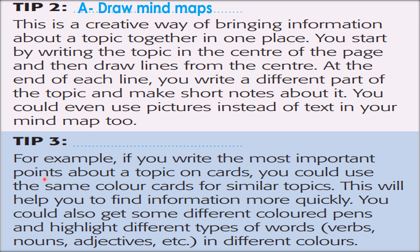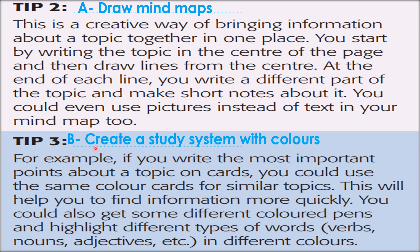Tip three: For example, if you write the most important points about a topic on cards, you could use the same color cards for similar topics. This will help you find information more quickly. You could also use different colored pens and highlight different types of words — verbs, nouns, adjectives — in different colors. This matches heading B — 'Create a study system with colors.'